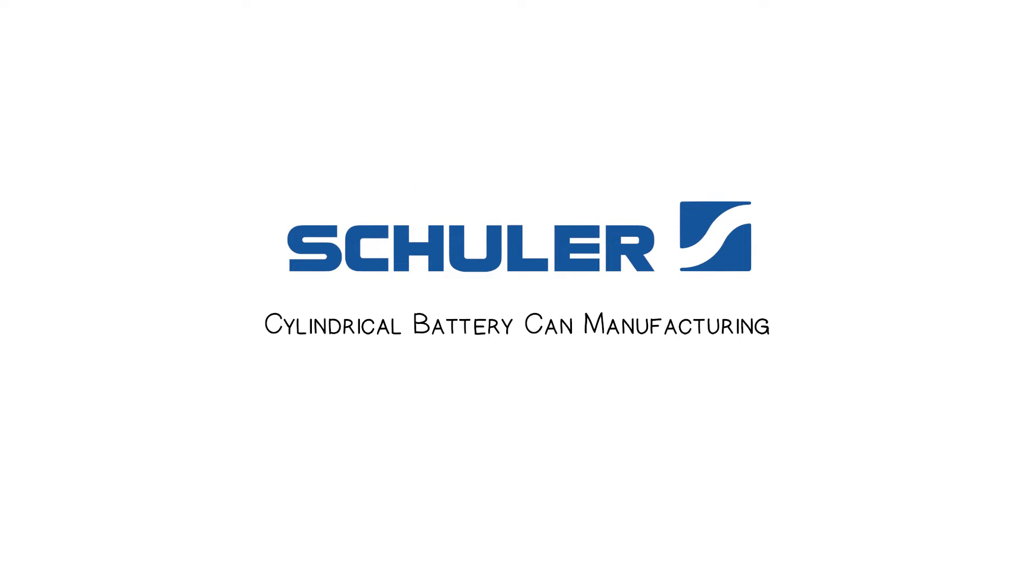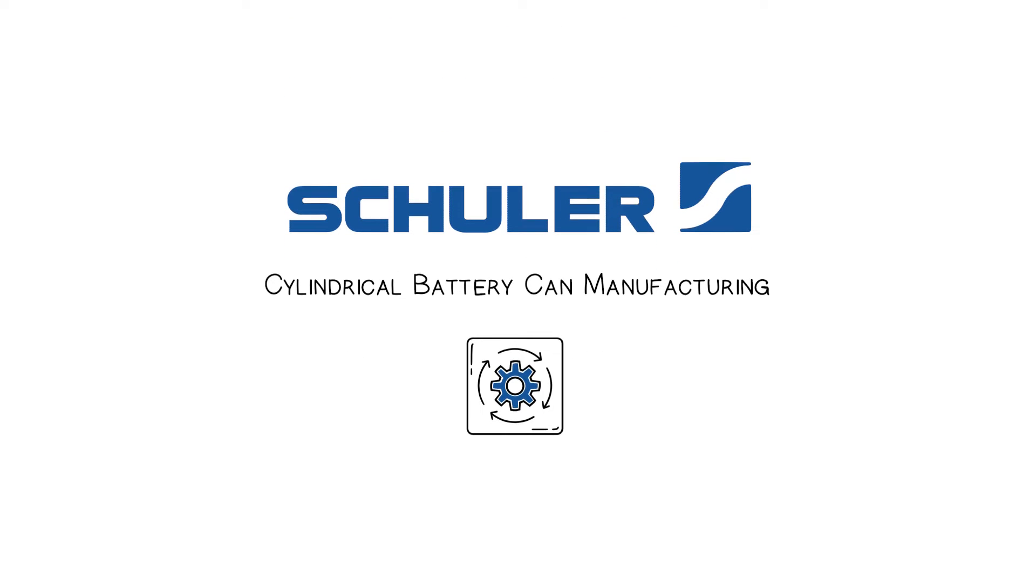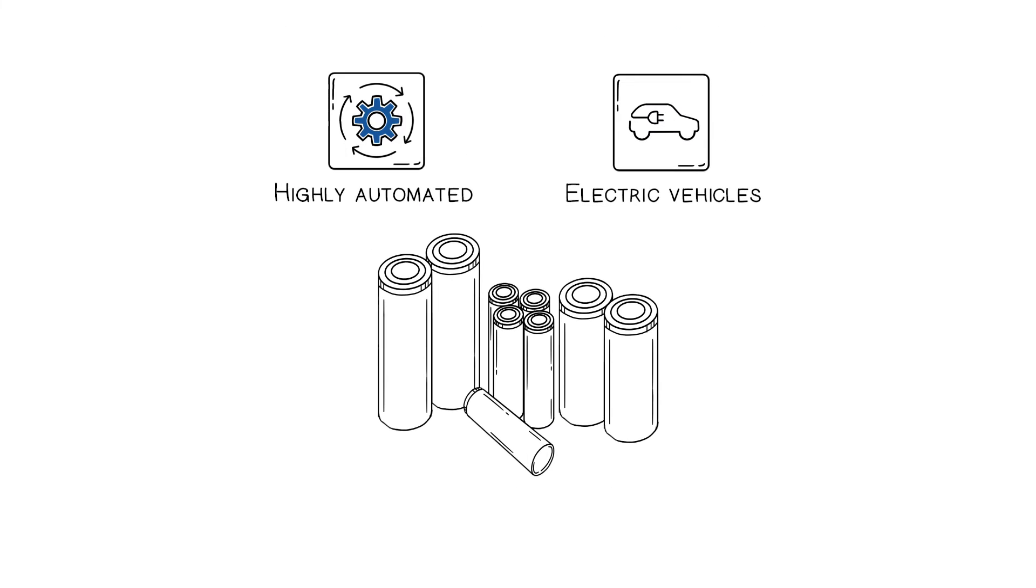The Schuler battery can manufacturing line is a highly automated line to produce battery housings for cylindrical battery cells. This is how production works.